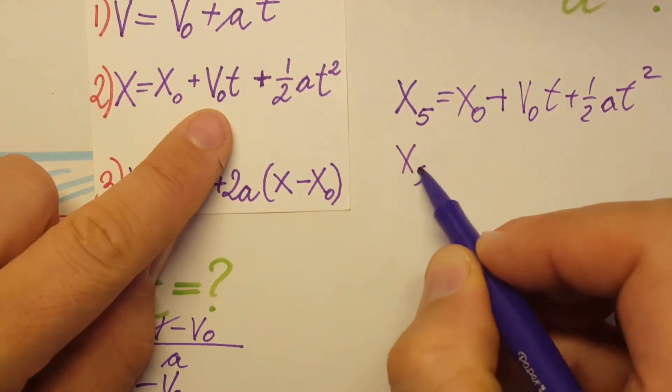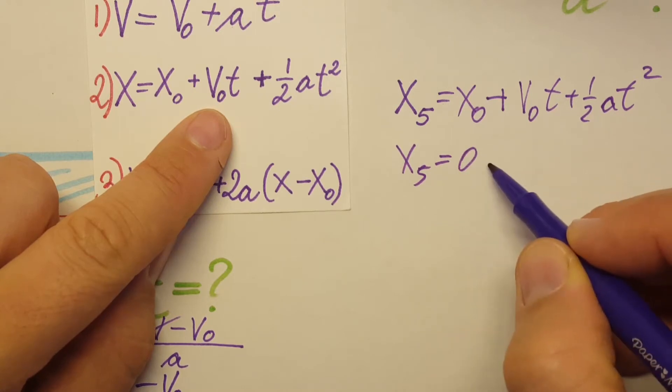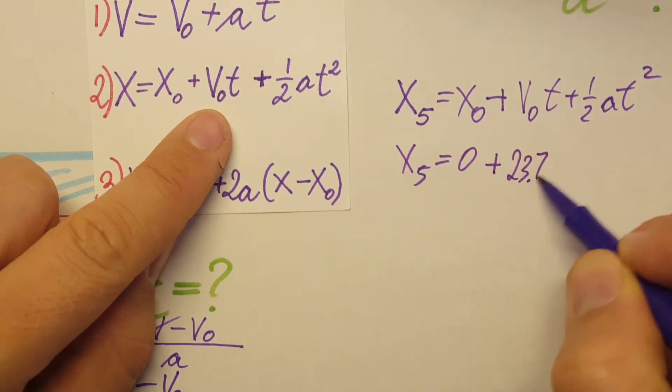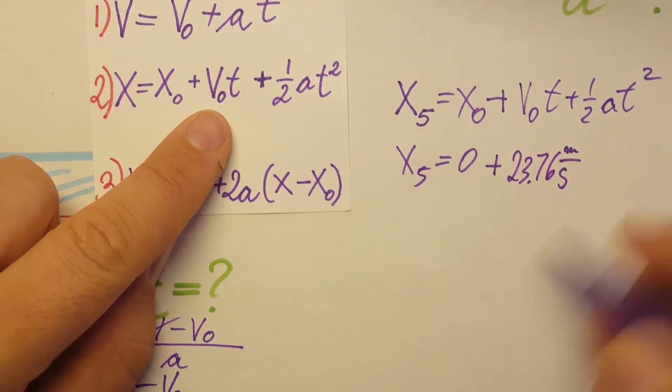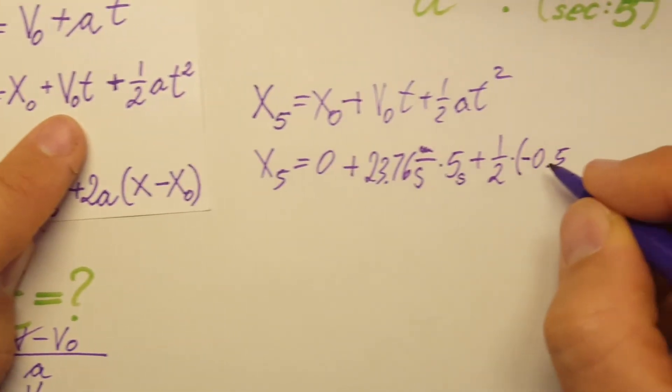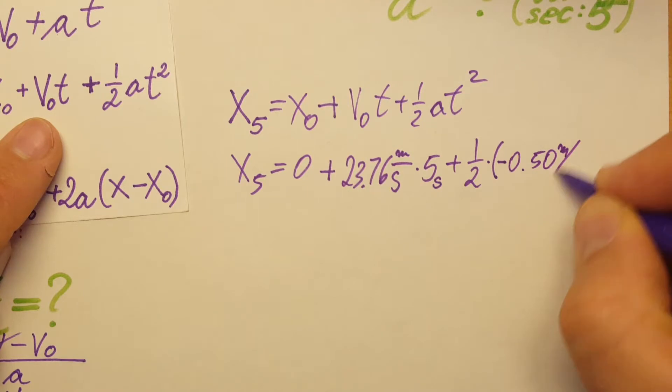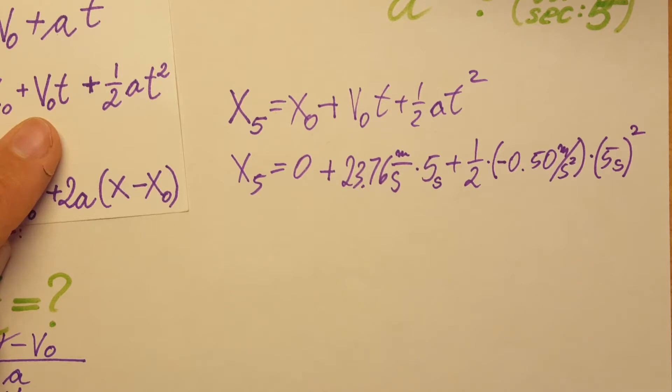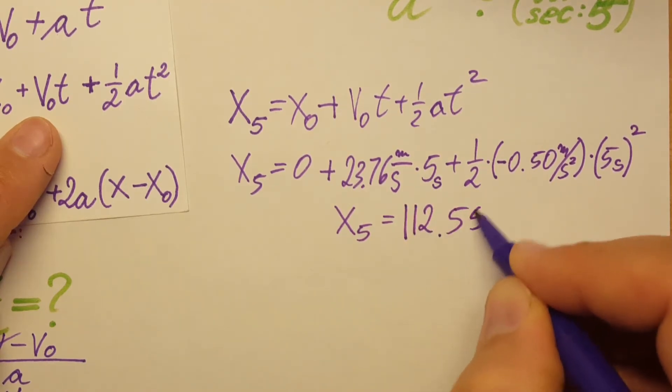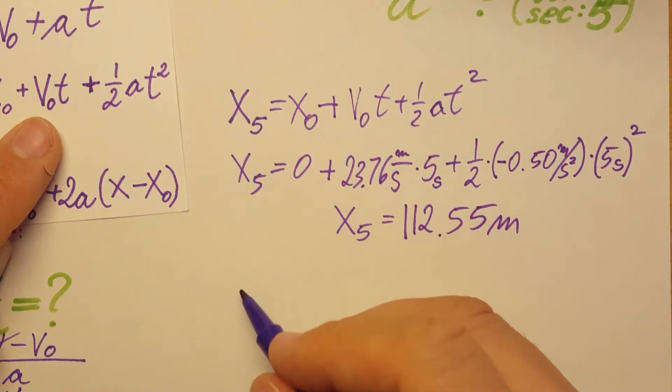Let's calculate: zero plus 23.76 meters per second times five seconds, plus one half times negative 0.50 meters per second squared times five seconds squared. With a calculator, our distance is 112.55 meters.